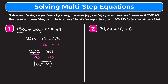Example 2 is 3 times the quantity of 2x plus 4 equals 6. There are two ways to solve this: we can distribute the 3 or divide out the 3. I like to divide out the 3, so that's how I'll solve this one. Later in the video we'll go through one where we distribute first. We have the 3 being multiplied by things in parentheses.